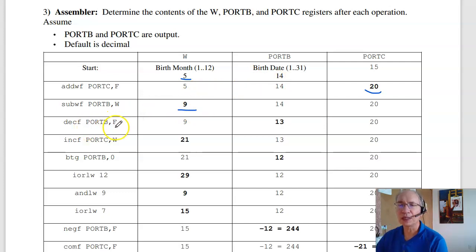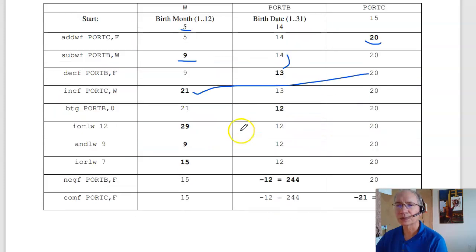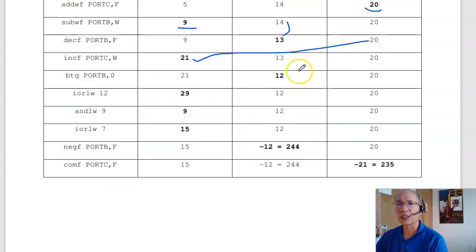Decrement port B, put the result in port B. So 14 goes to 13. Increment port C, put the result in W. So 20 goes to 21. Toggle bit 0 of port B. 13 becomes 12. You can take the bit pattern 13 as 1101. Take the least significant bit, make that 1100, or 12.